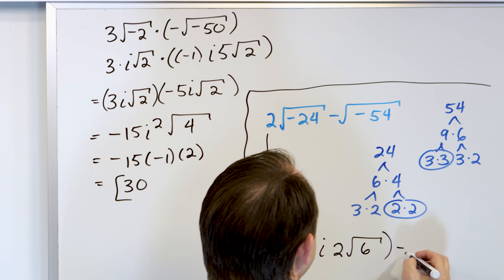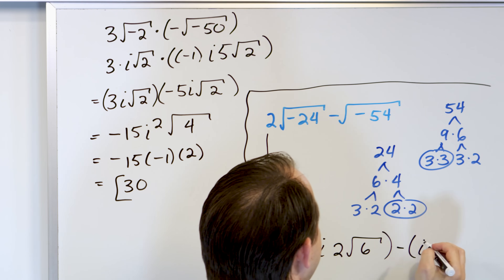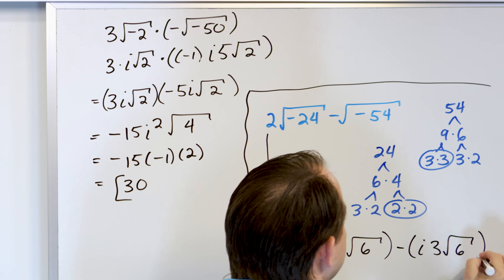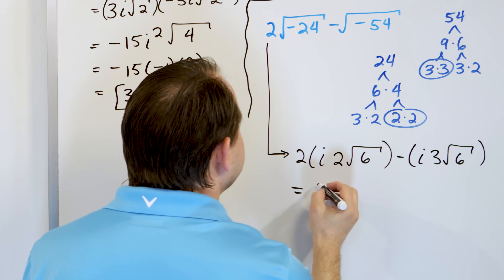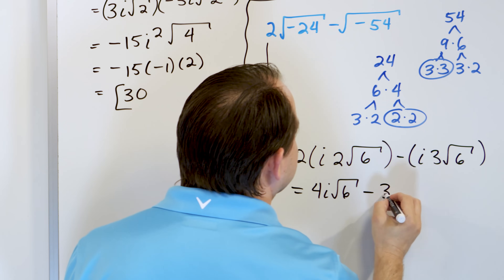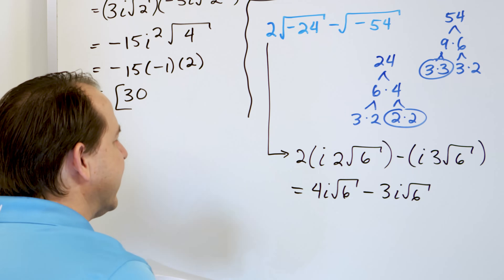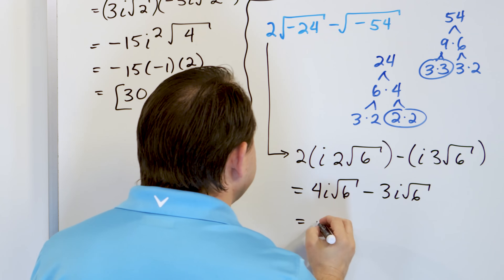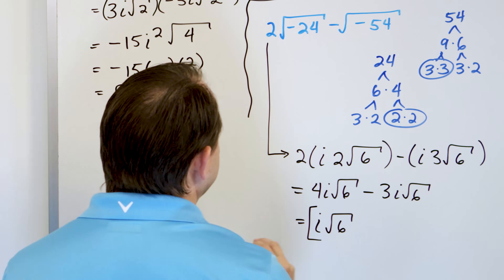The minus sign comes from between the terms. The square root of negative 24 gives us i, with 2 root 6 from the radical, and multiplied by the 2 outside we get 4i√6. The square root of negative 54 gives us 3i√6. We have root 6 matching and i matching, so we can subtract: 4 minus 3 is 1, giving us 1 times i times root 6, which is i√6. That's the final answer.